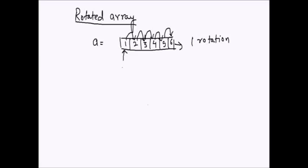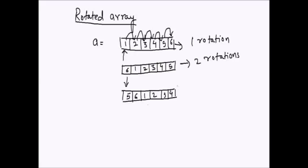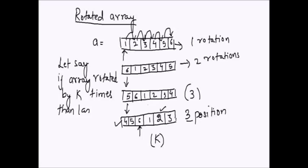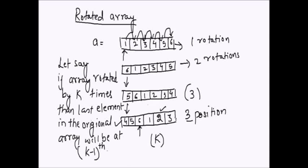If I rotate the array again — meaning two rotations on the original — and then once more, we have rotated it by three positions. This is a rotated array rotated by three positions. If the array has been rotated by k positions, then the last element of the original array will be at index k-1. So if asked for the index of the minimum element, it will be at the kth index.